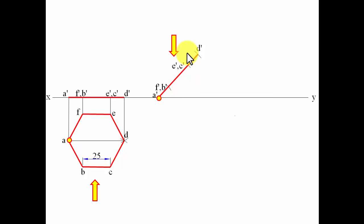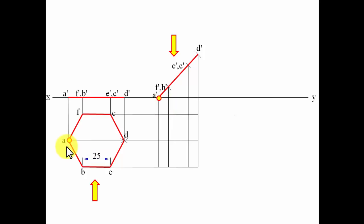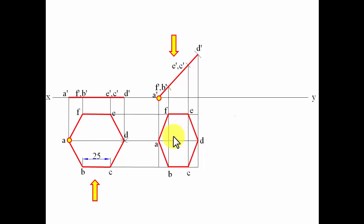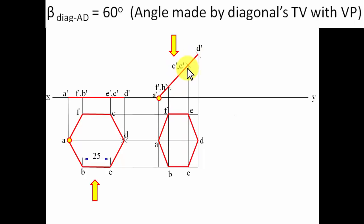Now let's look at this from the top. Draw projector lines downward and from left to right, and find the intersection points. The horizontal for A and the vertical for A gives point A. The horizontal for B and the vertical for B gives point B. Similarly all remaining points are worked out. Joining them in sequence gives a squeezed or compressed hexagon, and this A-D line represents the top view of the diagonal.